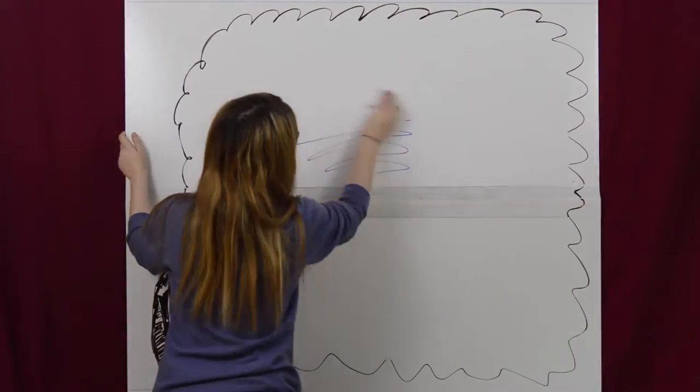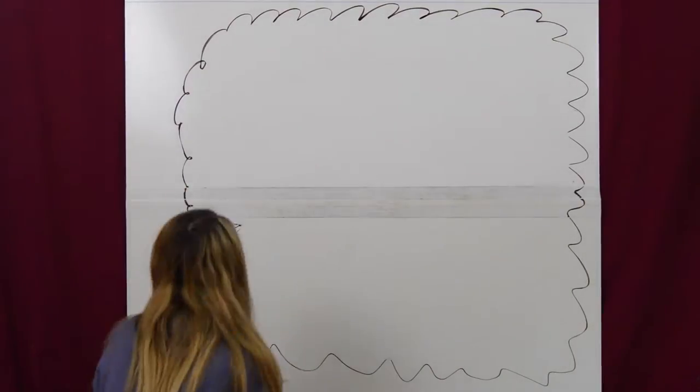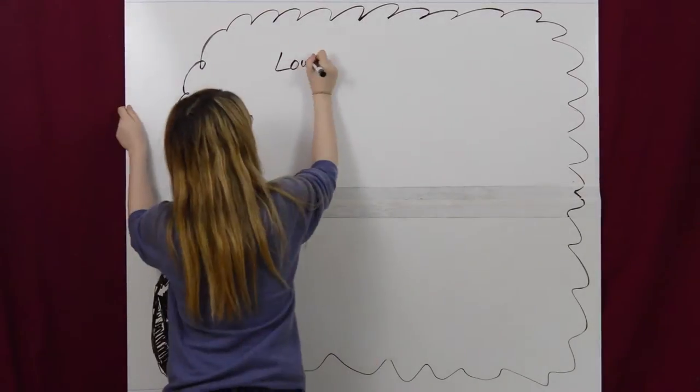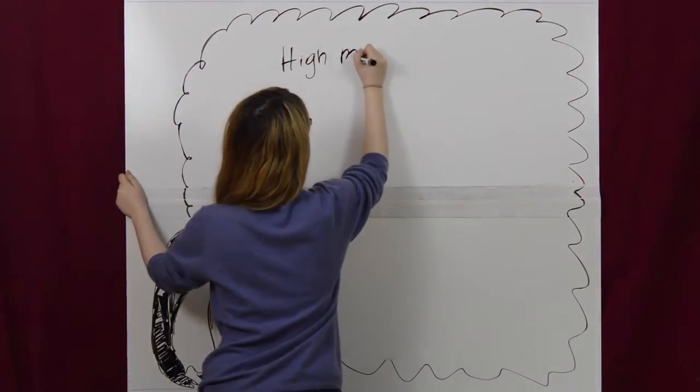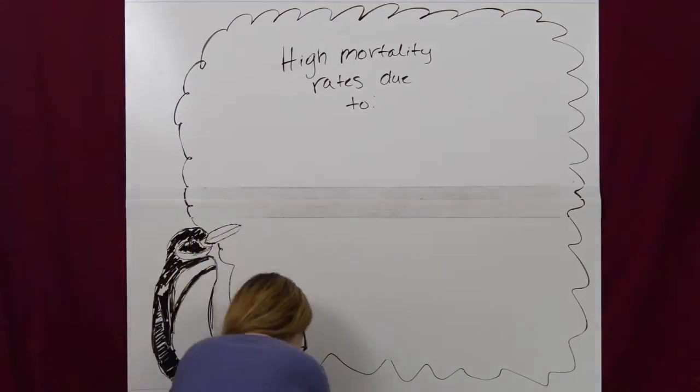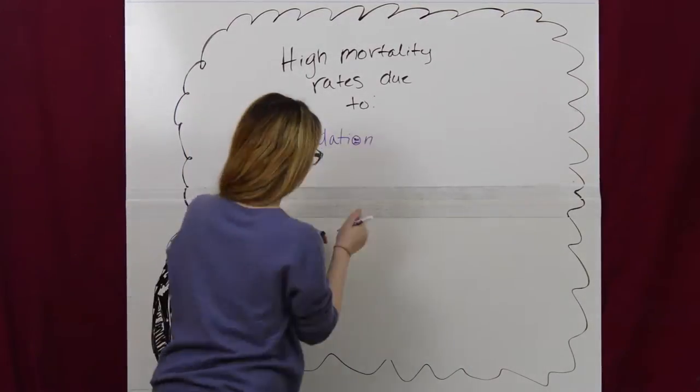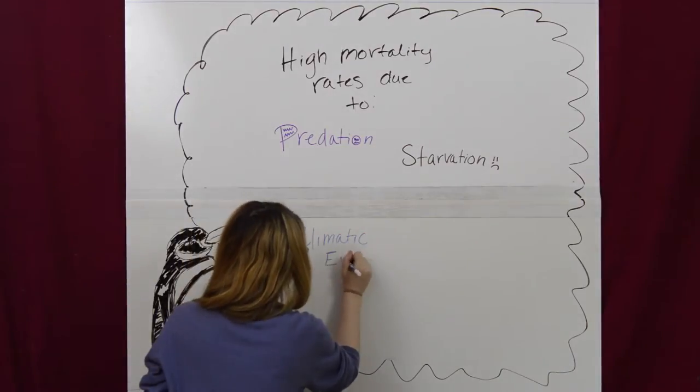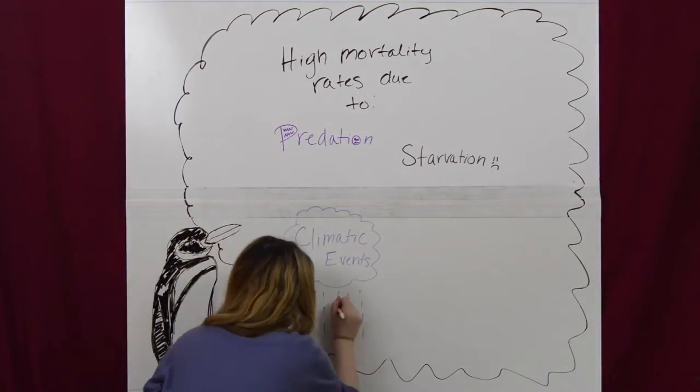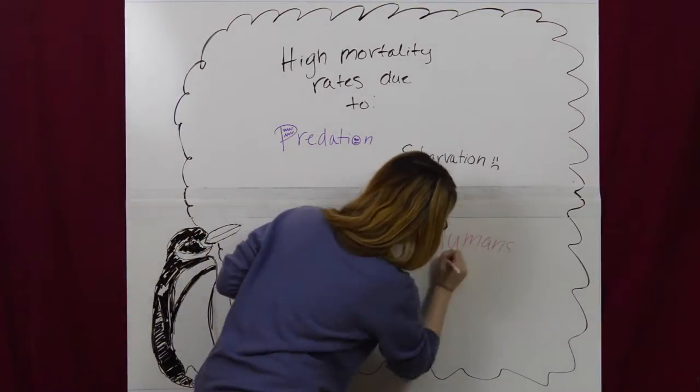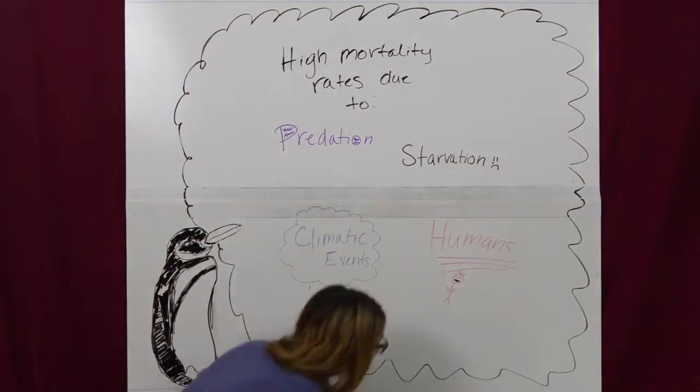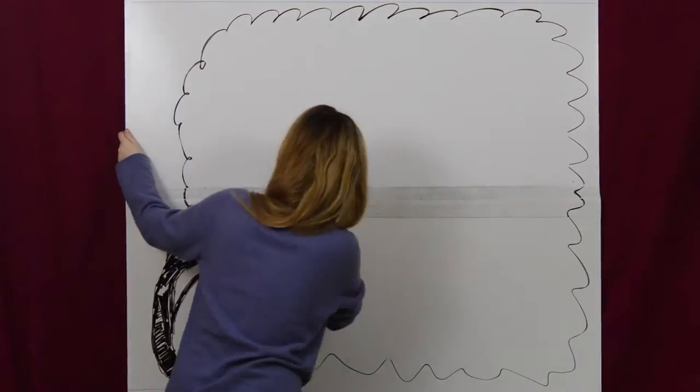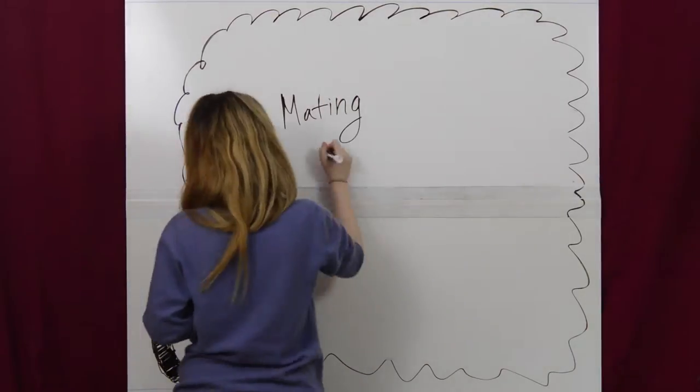Galapagos penguins can live for 15 to 20 years. Because of high mortality rates due to predation, starvation, climatic events, and human disturbance, most Galapagos penguins do not live to such ages.